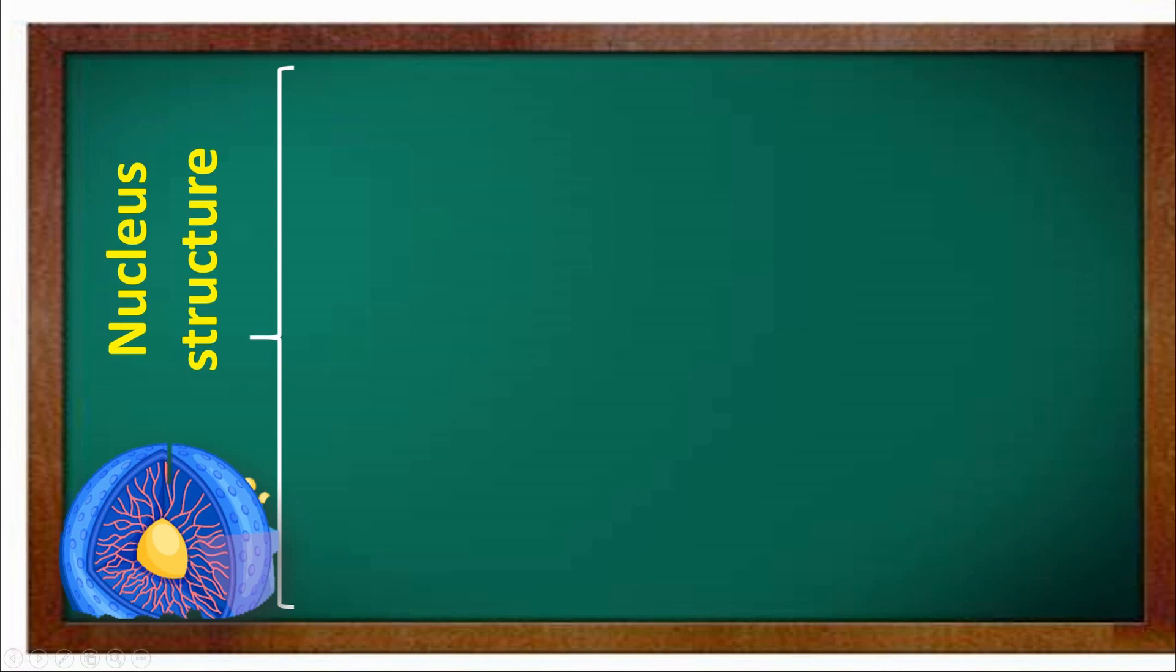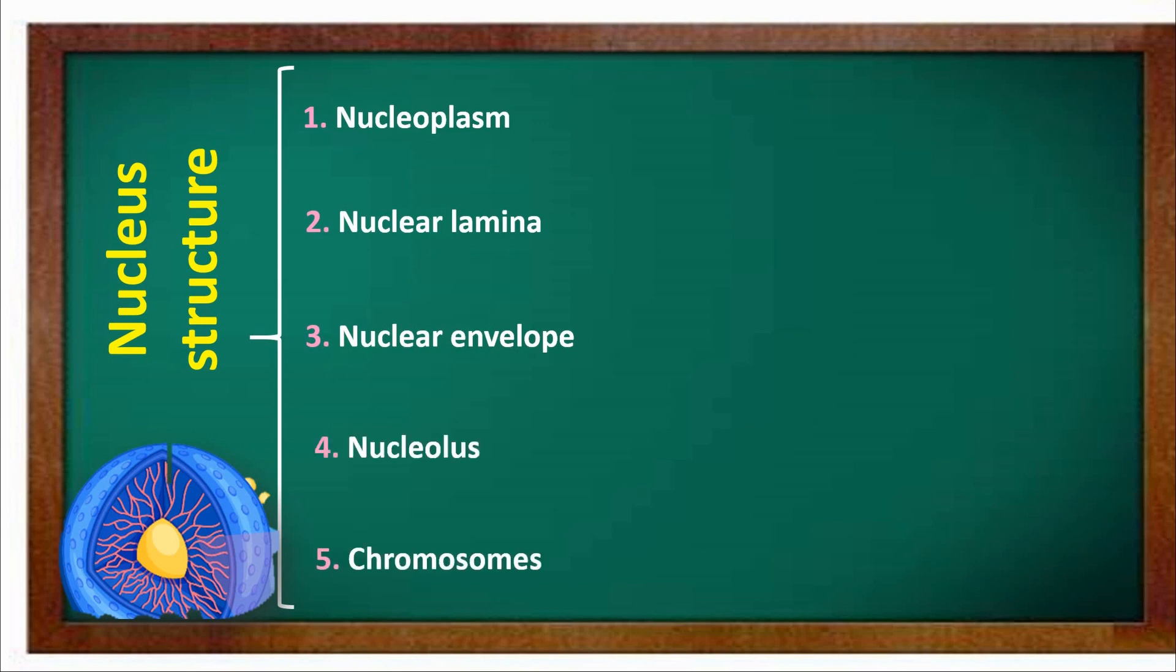Nucleus structure. Nucleus has five parts in its structure: nucleoplasm, nuclear lamina, nuclear envelope, nucleolus, and chromosomes.